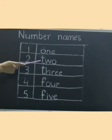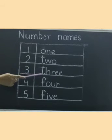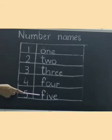1, 2, 3, 4, 5. Children, now tell me which number name is written? Yes, it is 3.